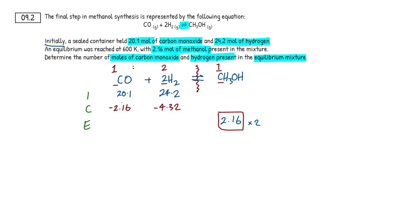So real simple. You can literally just chuck this in your calculator. What is 20.1 minus 2.16, 17.94. What is 24.2 minus 4.32,